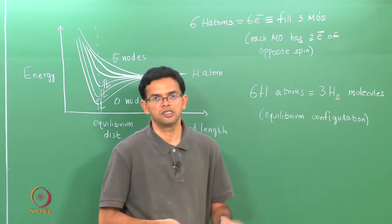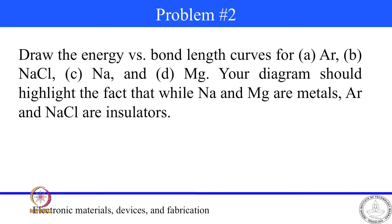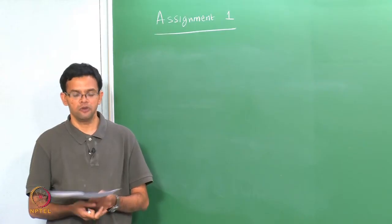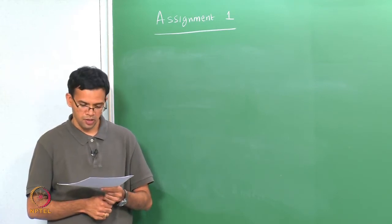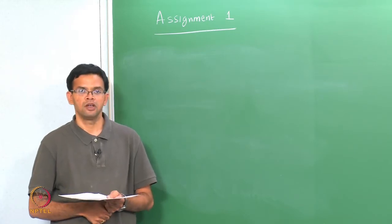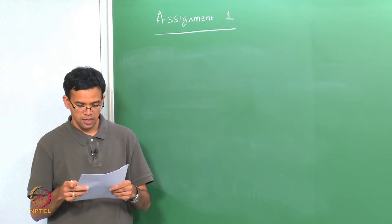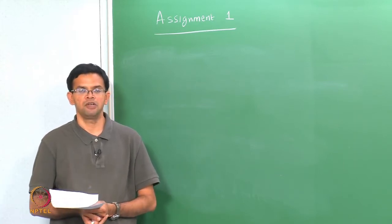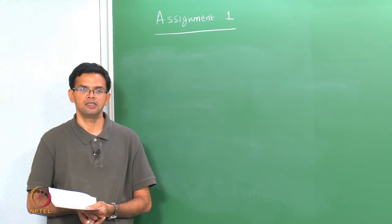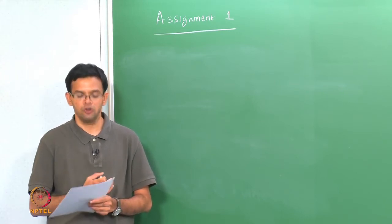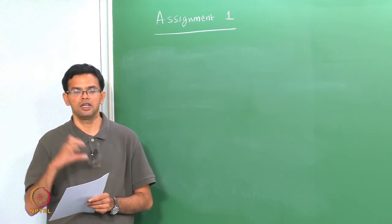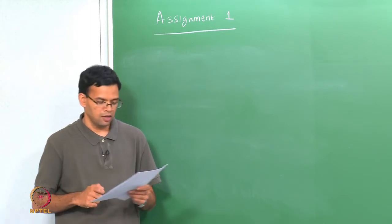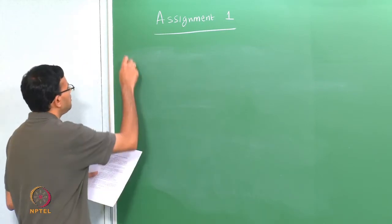Let us now go to question 2. We want to draw energy versus bond length curves for various elements and compounds: argon, sodium, sodium chloride, and magnesium. The important thing to note is that sodium and magnesium are metals - the valence band and conduction band should overlap - while argon and sodium chloride are insulators, so we should show a band gap.